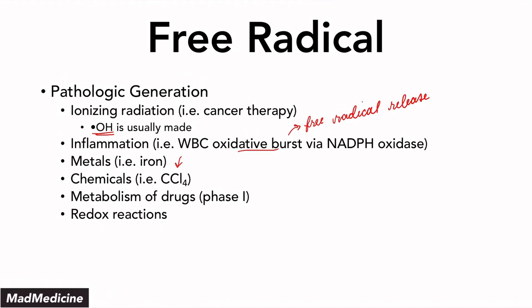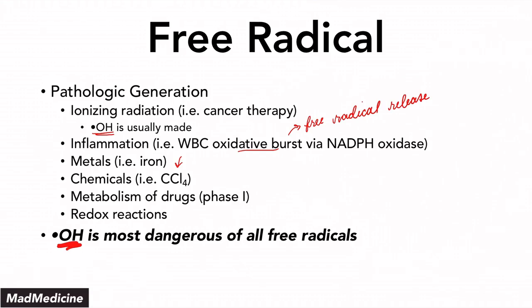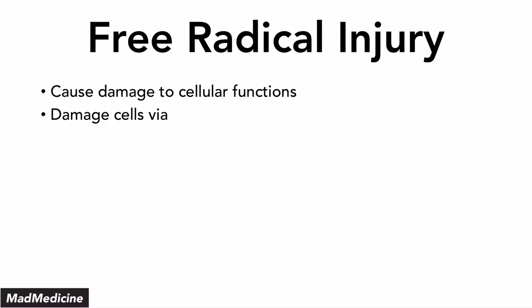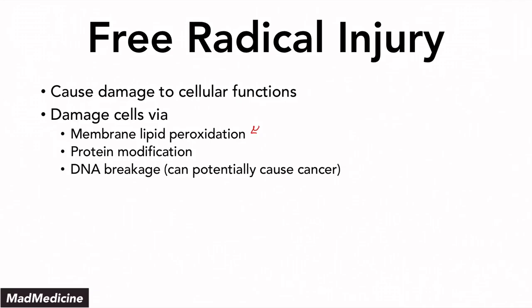The key thing to remember, however, is that the hydroxide free radical is the most dangerous of all free radicals — meaning most injury that occurs pathologically is going to come from the hydroxide free radical. When it comes to the injury, free radicals can damage cellular functions by attacking the membrane, causing membrane lipid peroxidation. They can modify proteins so they don't function properly. You can even have DNA breakage, which can actually lead to cancer. Free radical injury is associated with neoplasm and cancer formation. It can also induce cellular apoptosis — if a cell realizes it's damaged, it will undergo apoptosis to prevent further injury in the body.